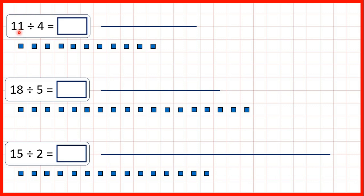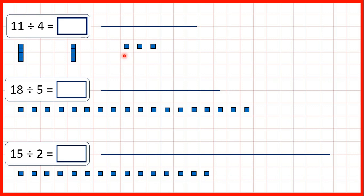So let's start with 11 divided by 4. We have 11 blocks here and one way to divide by 4 is to make groups of 4. So here we have one group of 4. Now we can make a second group of 4, but then we have these 3 blocks that are left over — we can't make a group of 4.